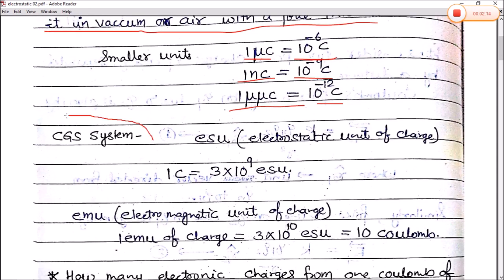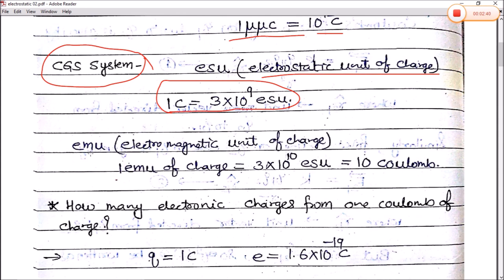In the CGS system, the unit of charge is ESU (electrostatic unit of charge). The relation between SI and CGS systems is: 1 coulomb = 3 × 10⁹ ESU. Another unit is EMU (electromagnetic unit of charge), and 1 EMU of charge = 3 × 10¹⁰ ESU, which equals 10 coulombs.